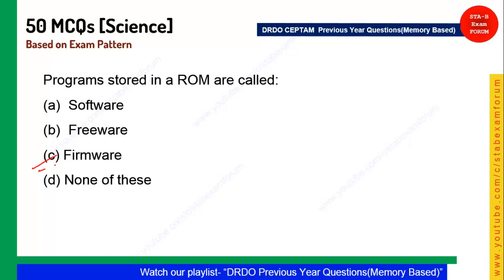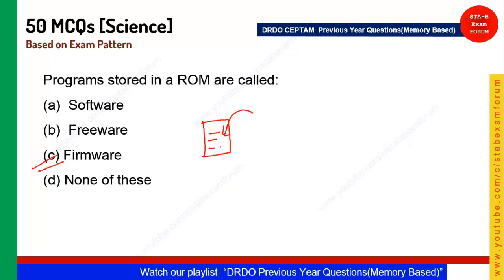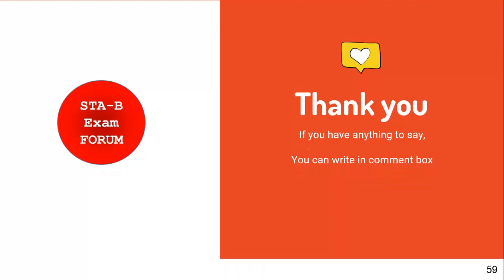Final question: Programs stored in ROM are called what? They are called firmware. If you write software into a ROM (Read Only Memory), it becomes firmware. That concludes today's video of 50 science questions. Hopefully this will help you in your upcoming exam. Thank you and have a nice day.